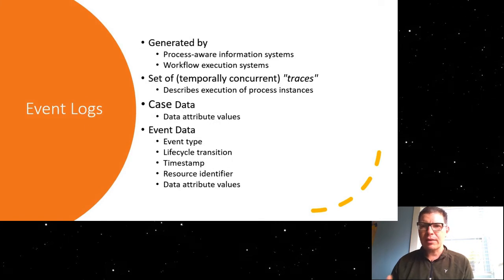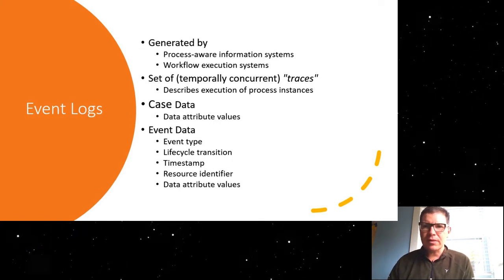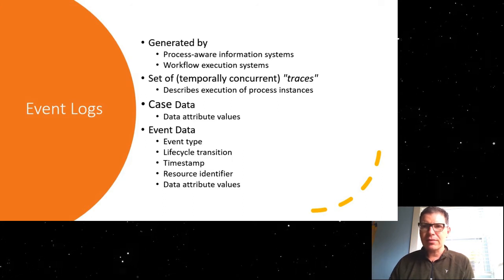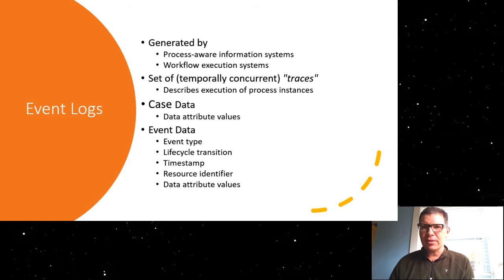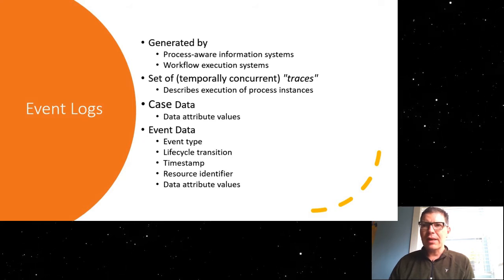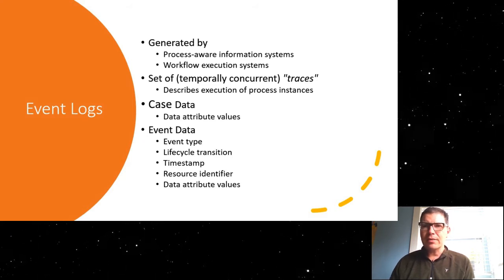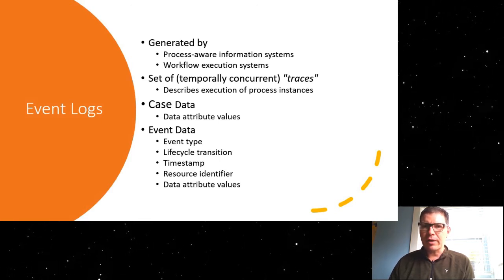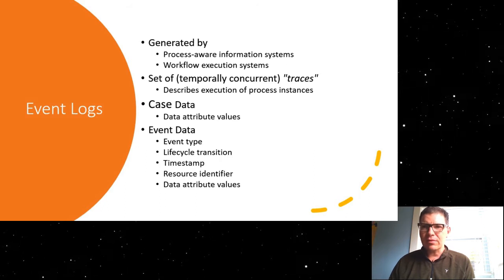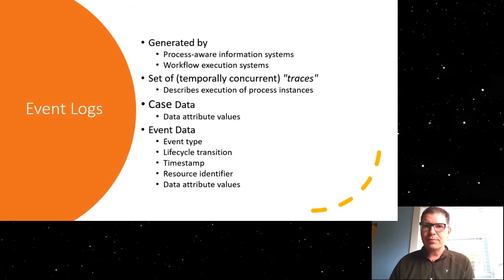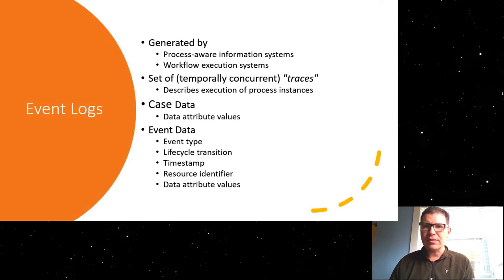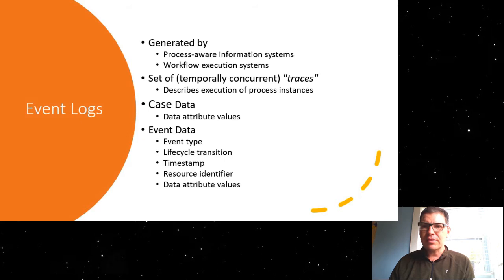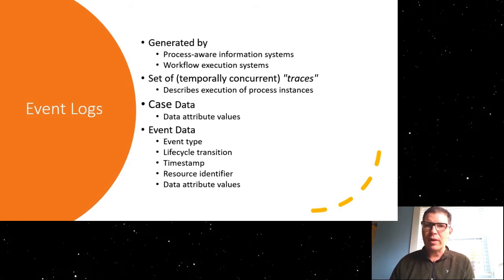Now, when such a process runs in an organization, we talk about a case, or a process instance. Typically this is done using information technology to support this, and by, when we run this process, we get a lot of information that is being logged by these systems. We call this information the event log, and an event log generally consists of a set of what we call traces. Every trace describes the execution of one process instance, or one case.